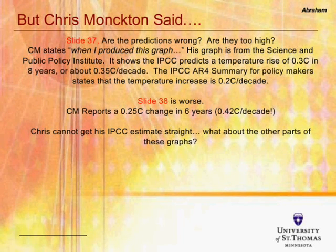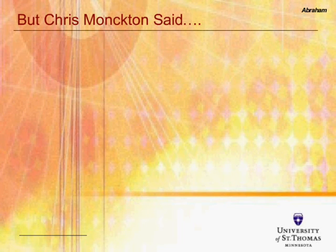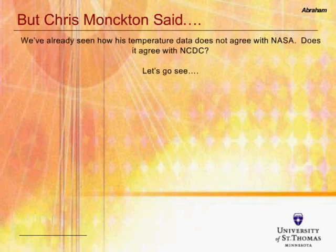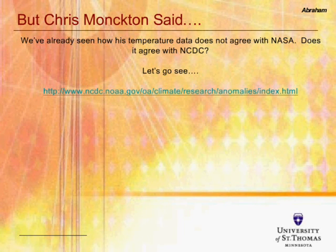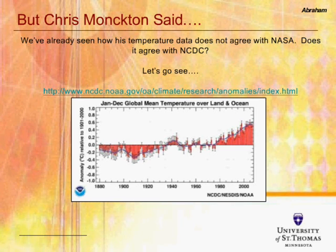Let's look at the other components of the graphs and see how well they reflect information from the most up-to-date sources. If you take a very short time period, you can get temperatures that rise or fall. So let's see what the NCDC says about temperature data, since Chris Monckton referenced them. Here's the link — you can get their temperature information, and here is their data back to 1880. Annual temperature variations are shown in red bars, and blue is the time-average curve. When you look at it on this scale, temperature is rising, and it's rising pretty dramatically.